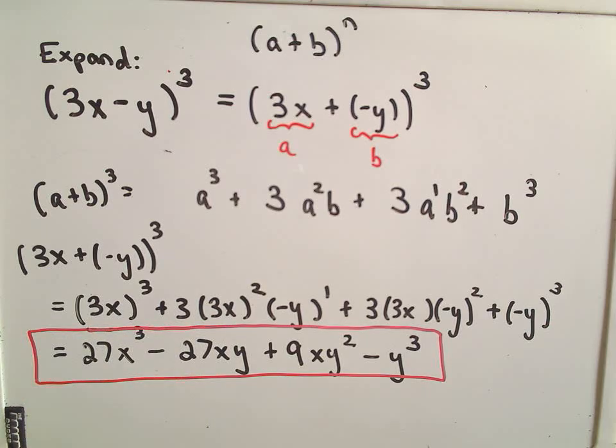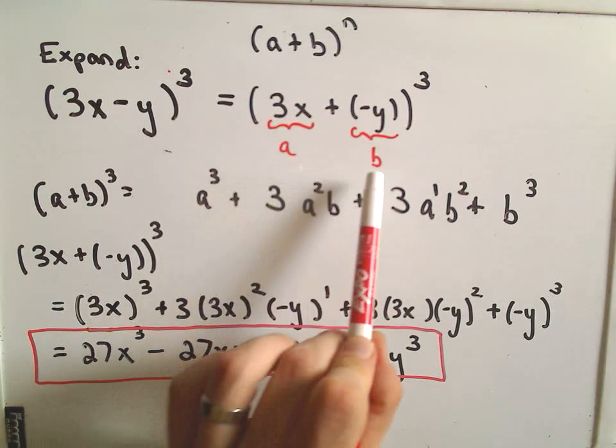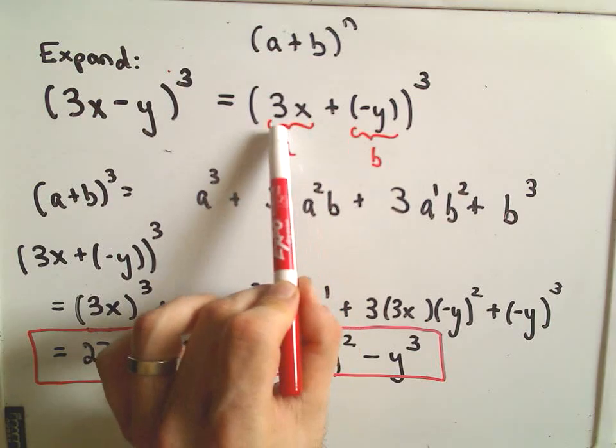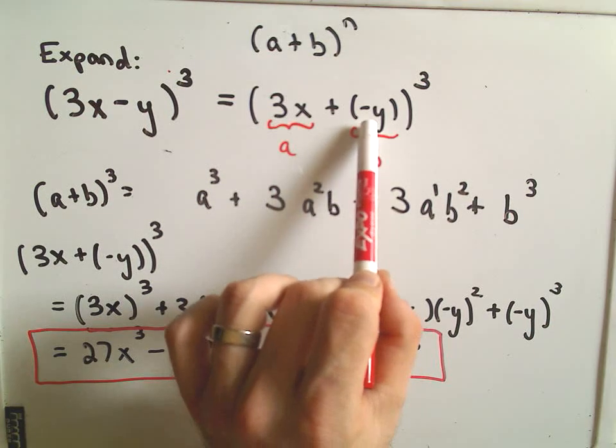Okay, so obviously, again, one other thing too, I said when you expand it, the coefficients on the first term and the last term are 1, and that's true when you just expand this very generic a plus b binomial formula. Obviously if the a and the b have coefficients, notice here the x has a coefficient of a 3. The b has a coefficient of a negative 1.